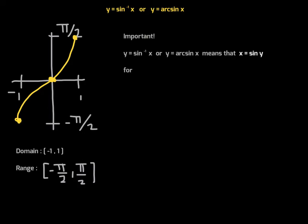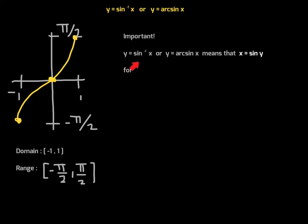The domain for arc sine of x is from negative 1 to 1, and the range — this is very important — is from negative π/2 to positive π/2. Y equals inverse sine of x means that x is sine of y; in other words, y is the angle whose sine is x. Y equals arc sine of x means y is the angle such that when you take sine of that angle, you get x. Understanding this notation is very, very important.